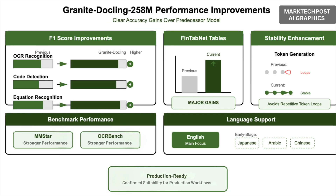The model demonstrates clear accuracy improvements over its predecessor: higher F1 scores for OCR, code, and equation recognition; major gains on FinTabNet table metrics; and better stability in avoiding repetitive token loops. Evaluation benchmarks also show stronger performance on MMSTAR and OCR Bench, confirming its suitability for production workflows.